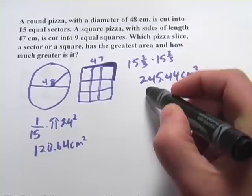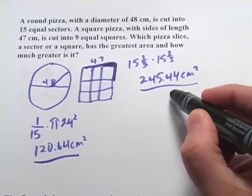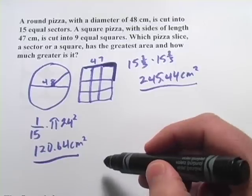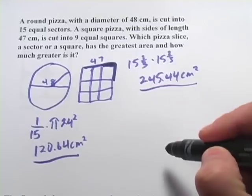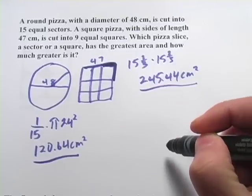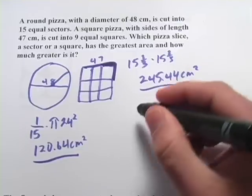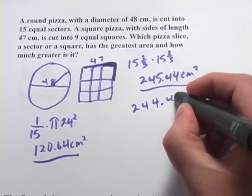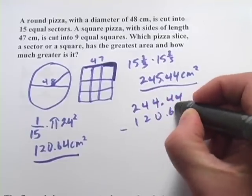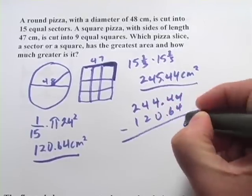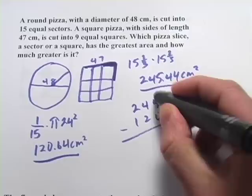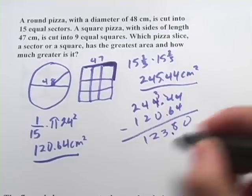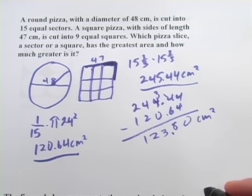And if you punch that in your calculator, you're going to get 245.44 square centimeters. So what you notice here is that the square piece is giving you double what you get from the sector of pizza. So I would definitely go after the square if you're feeling hungry. They're asking how much greater it is. If you want to know how much greater it is, you simply subtract. So 245.44 minus 120.64, and you get 123.8 more square centimeters of pizza.